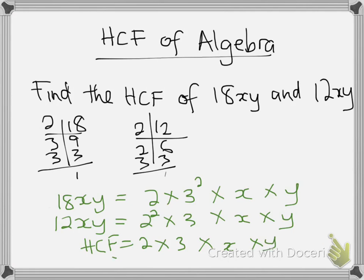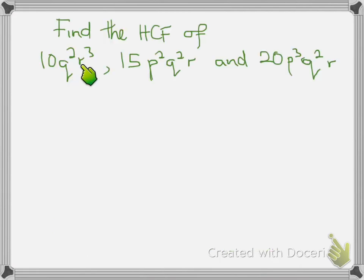This means 2 times 3 is 6, times x and y will be the highest common factor for 18xy and 12xy. Next example, we are given that: let's find the highest common factor of 10q squared r cubed,